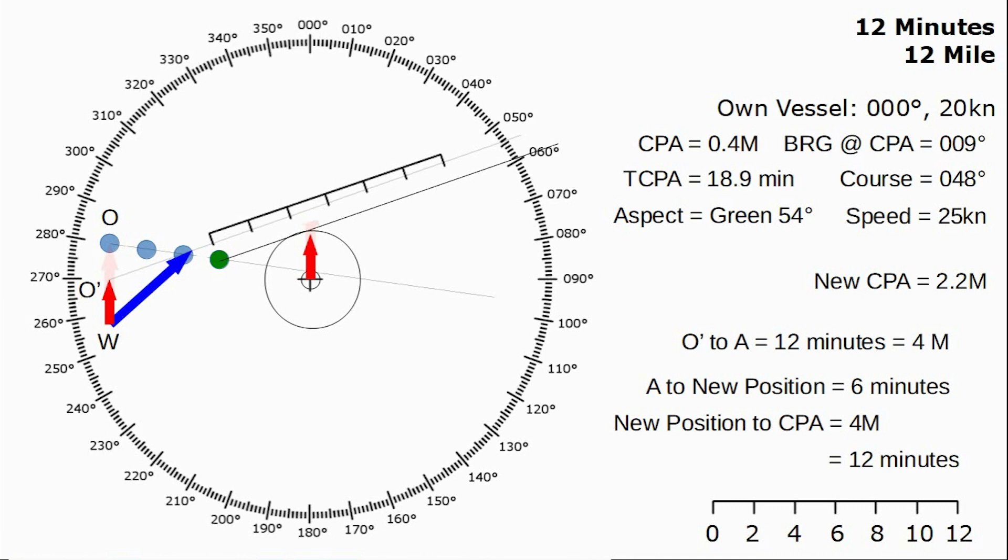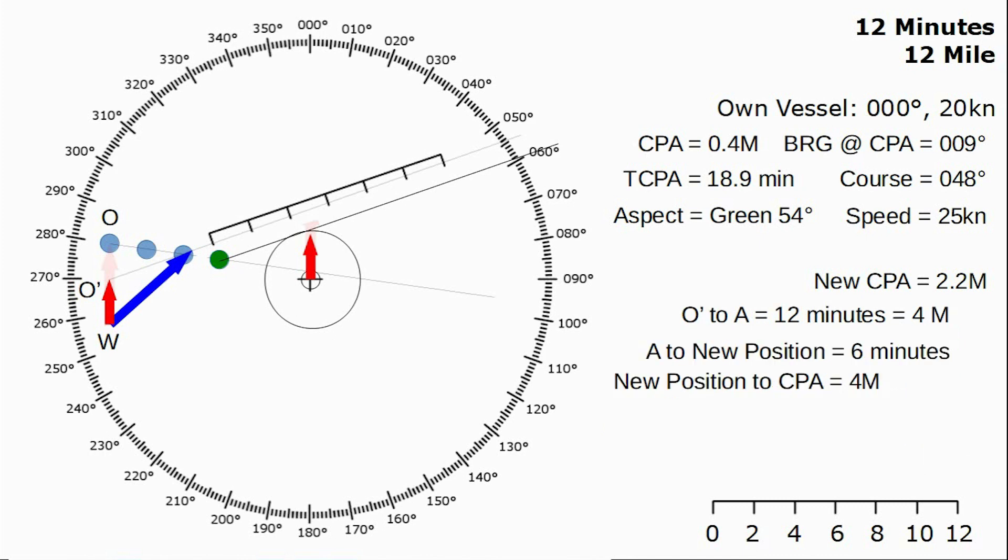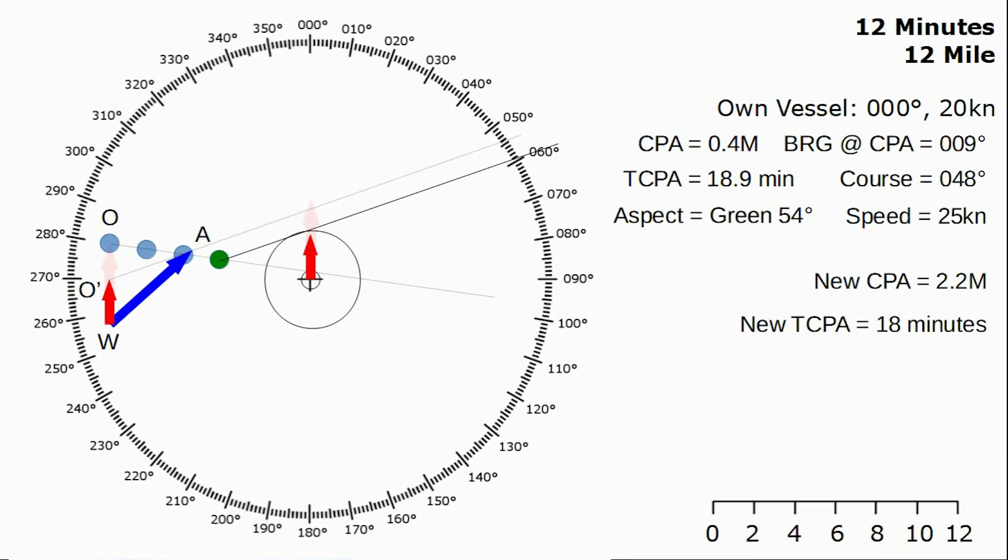If that wasn't exactly 4 miles we'd do a little bit of algebra and work out how long that would take. From that we can work out the new time to the closest point of approach which is 6 minutes the difference between the dots plus 12 minutes the difference from the new dot to the new CPA which comes out as 18 minutes. Our new TCPA is 18 minutes.